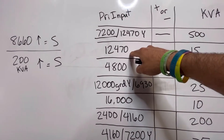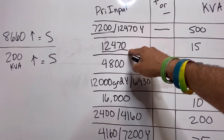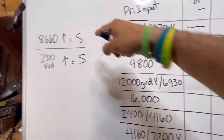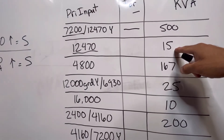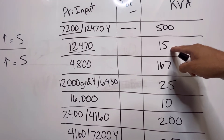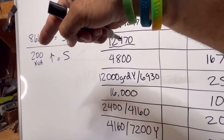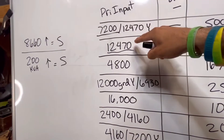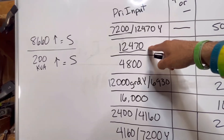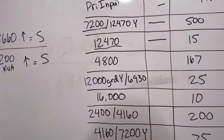The next one: 12470. So primary input is 12470 — I'm above 8660, which means I'm automatically going to be a subtractive can. This is only 15 KVA, so it's underneath the 200 KVA requirement. But remember, we only have to meet one of those qualifications to be subtractive. So this transformer is automatically subtractive.